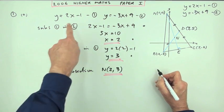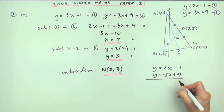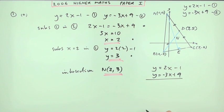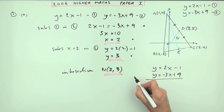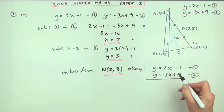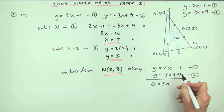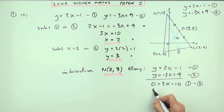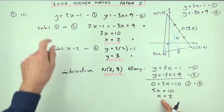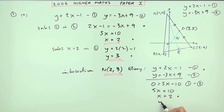Alternatively you could use elimination. With Y equals 2X minus 1 and Y equals negative 3X plus 9, subtract equation 2 from equation 1 to eliminate Y: 0 equals 5X minus 10, giving X equals 2 as before. Then substitute to find Y by the same substitution step. Either way, the marks are: one for indicating simultaneous equations, one for X, and one for Y.